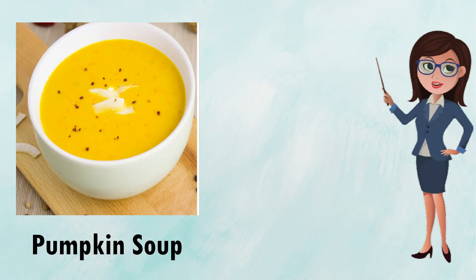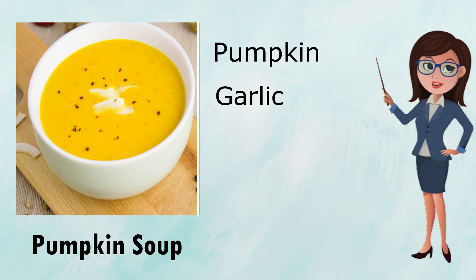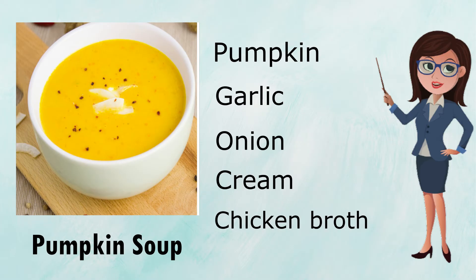Pumpkin soup — made from pumpkin, garlic, onion, cream, and chicken broth.